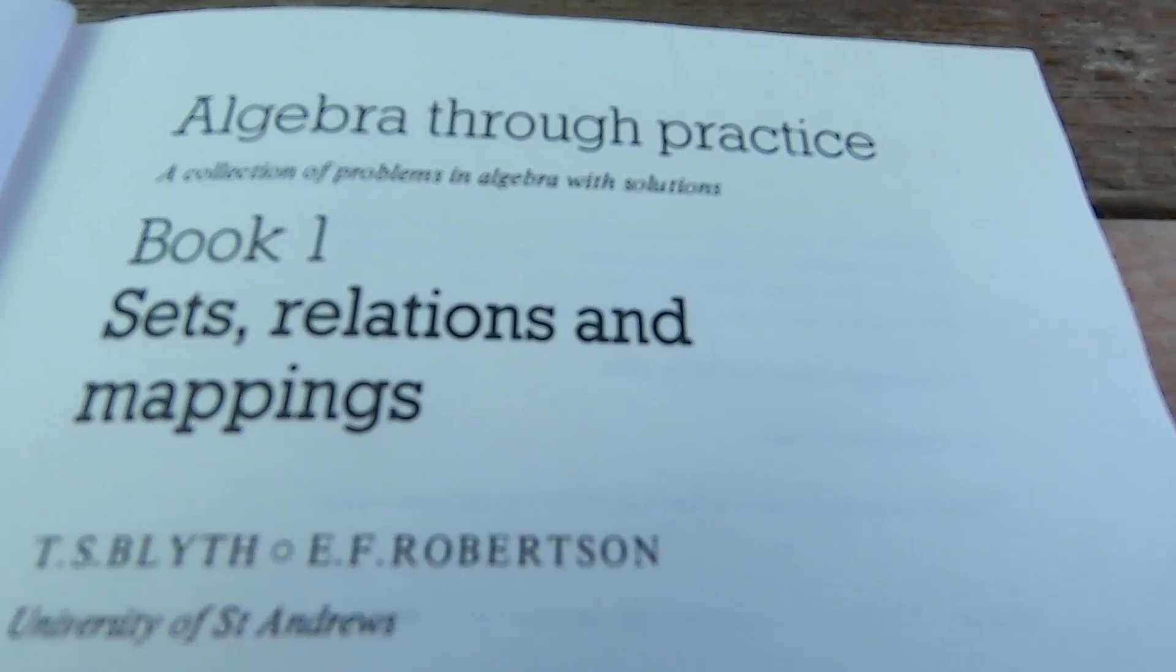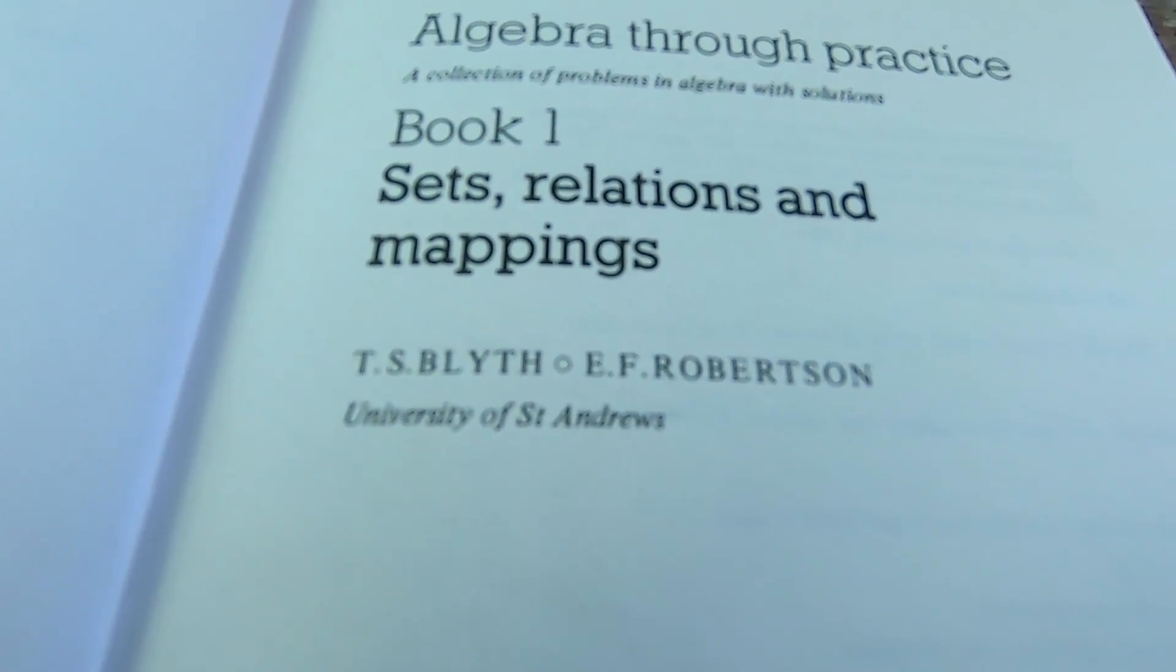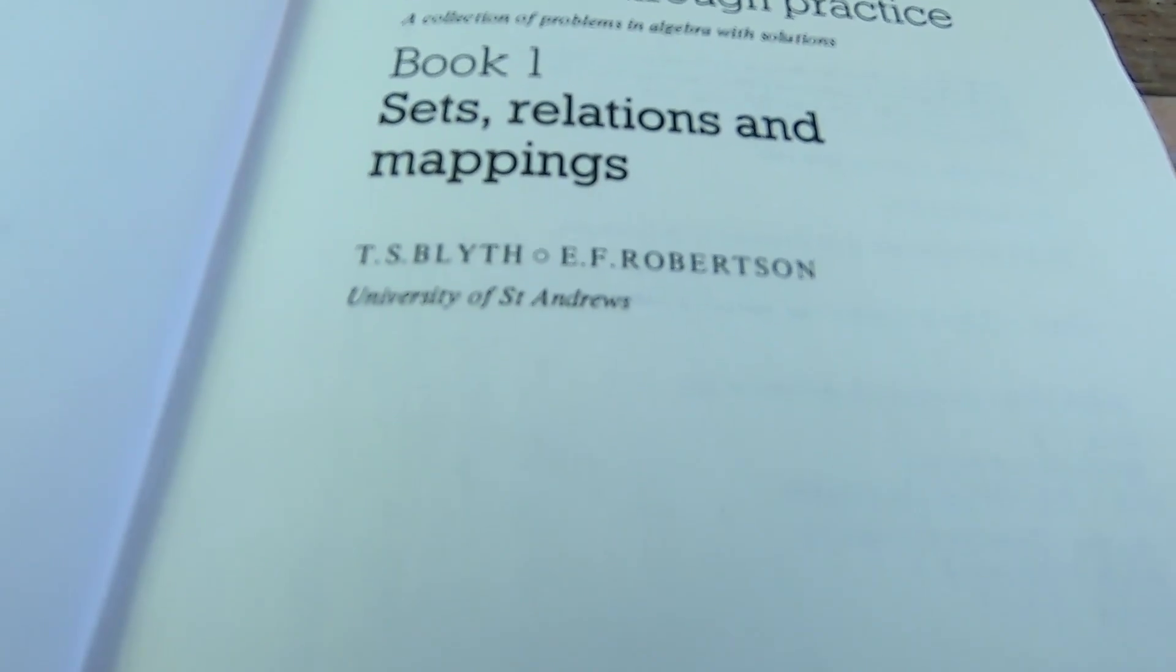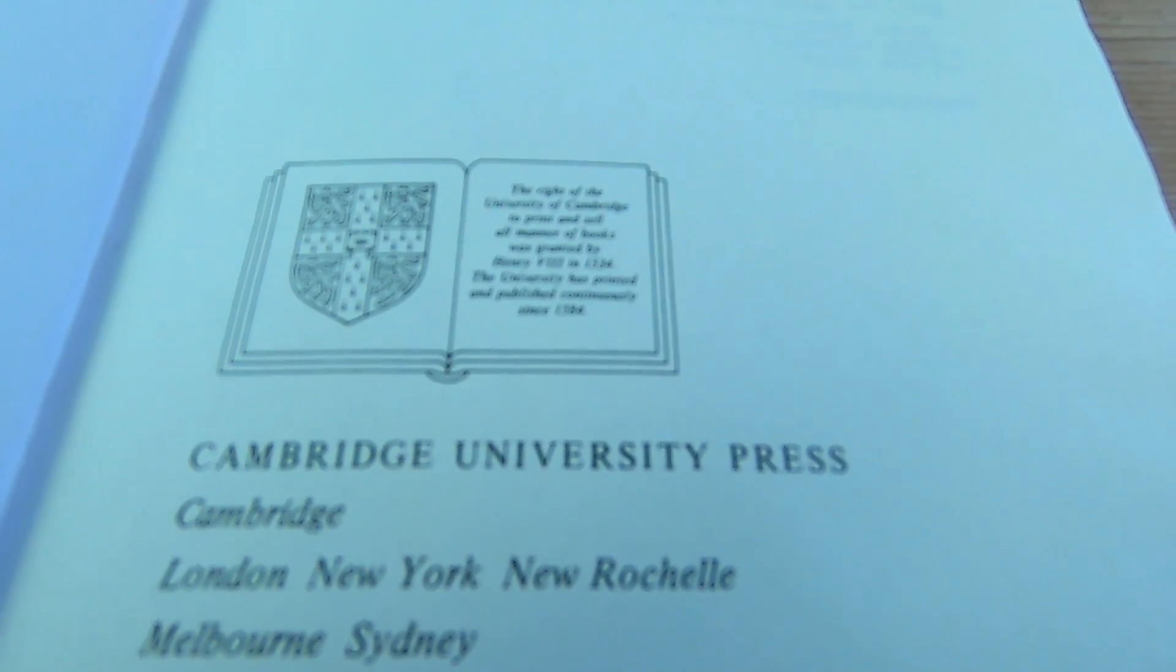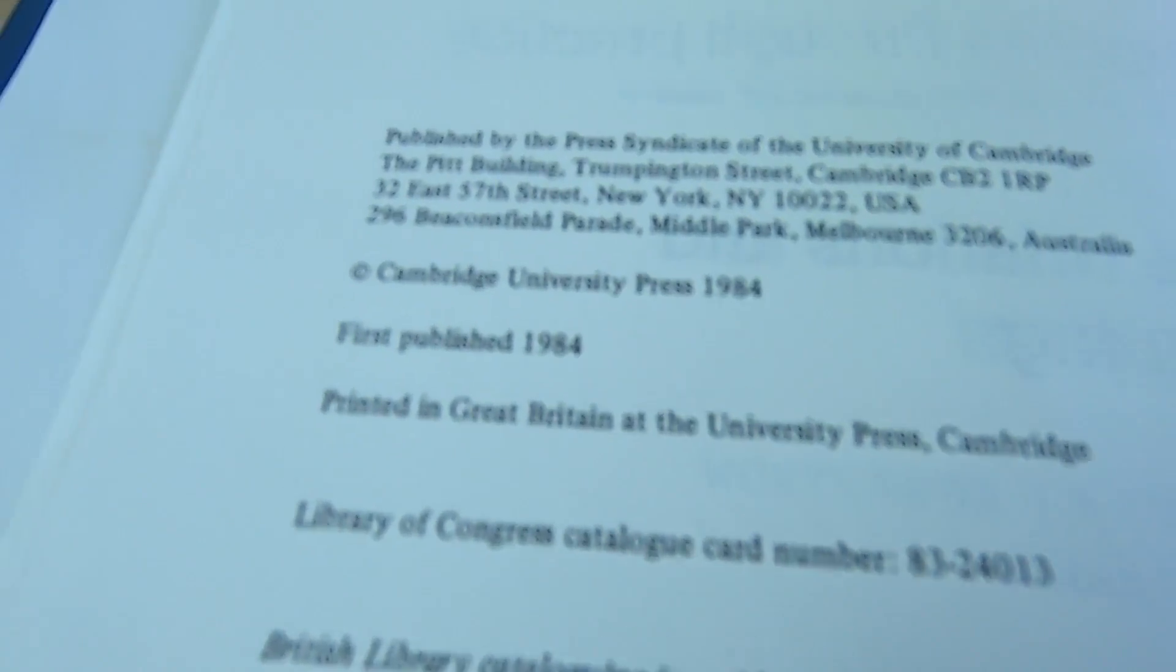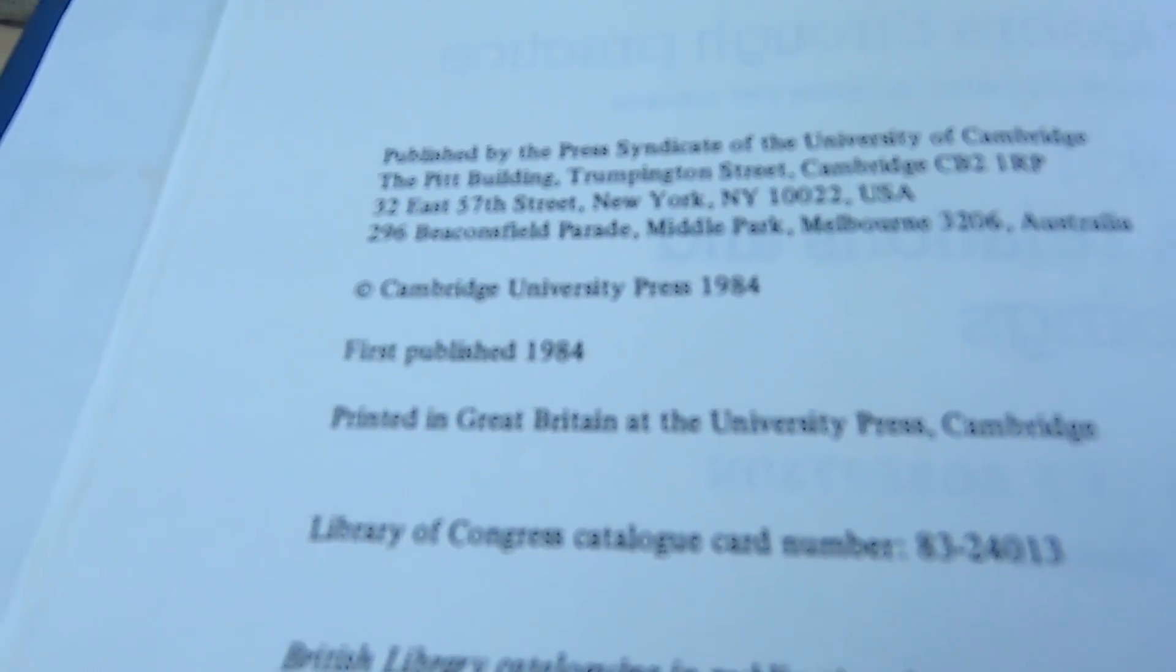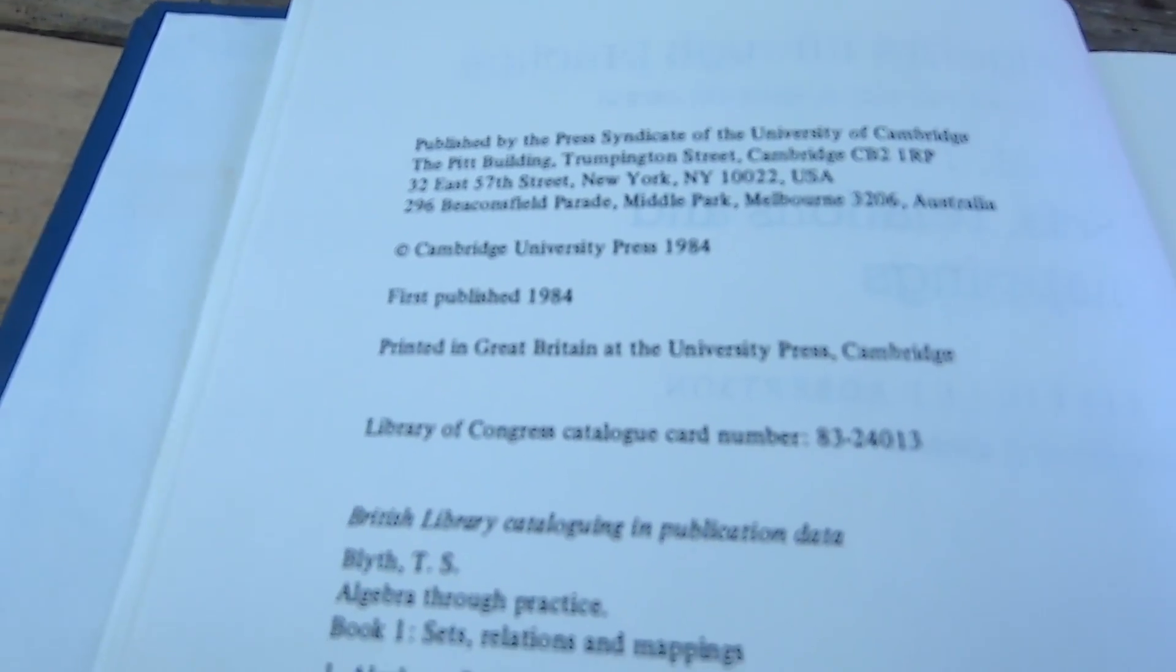Here's the inside Algebra Through Practice book one. Sets, relations and mappings, TS Blith and EF Robertson, University of St. Andrews. So really nice Cambridge University Press. This is a really good condition copy. Let me turn the page. Smells really good. It's actually really old despite the condition. 1984. That was a long time ago. I mean, it may not seem that way but we're in 2020 so 84, well, it's been a while. It's been a long time.